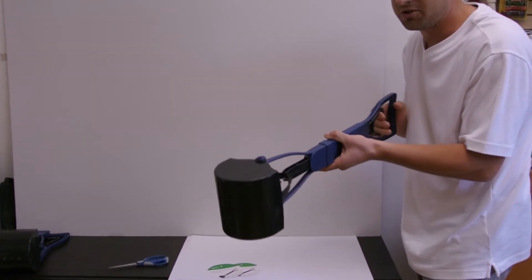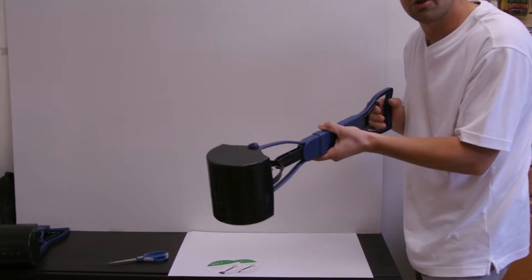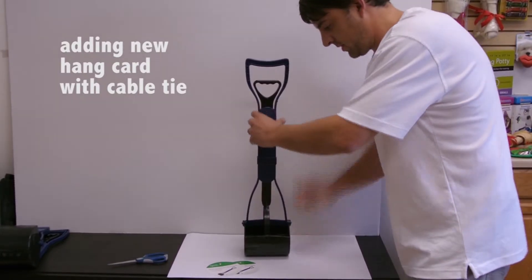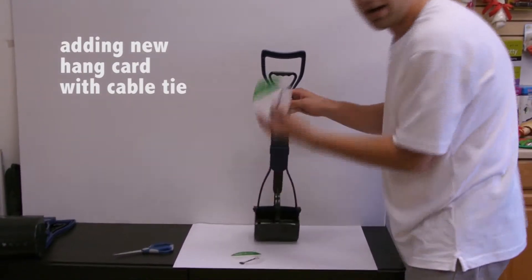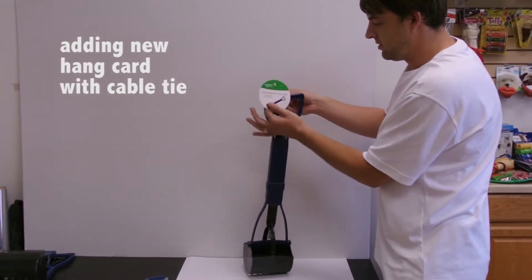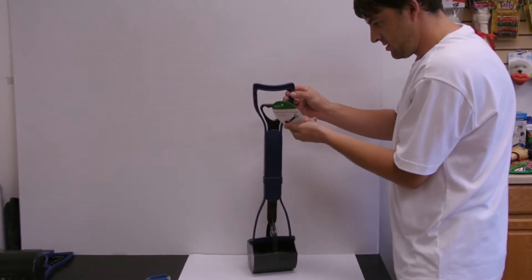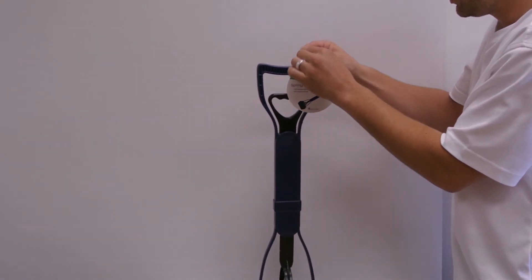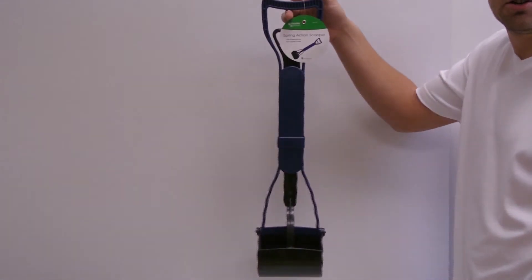You can test it. After two or three pulls it should be okay. The last step is we're going to add a hang tag to the handle which has a UPC on it. Put that on here with this cable tie. And now it's ready to be hung on the shelf.